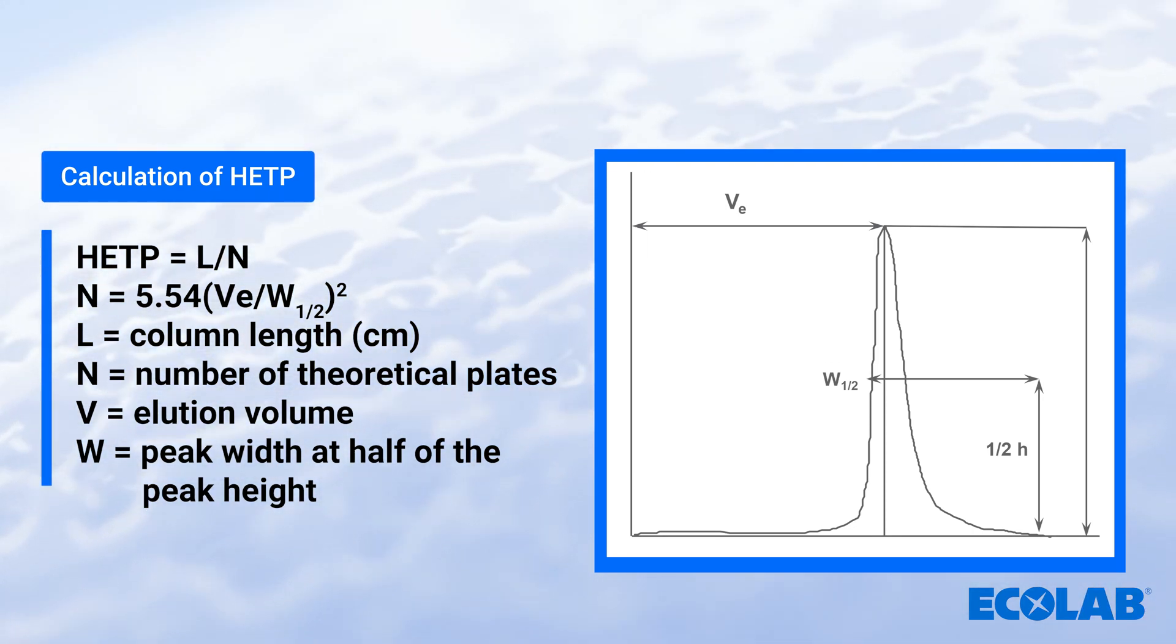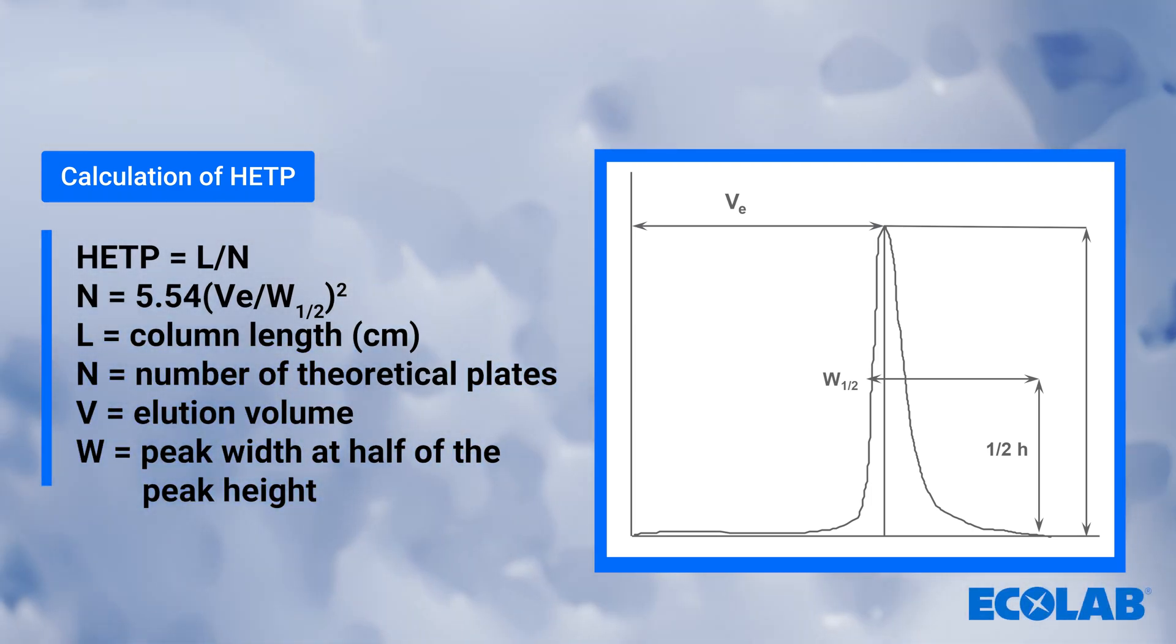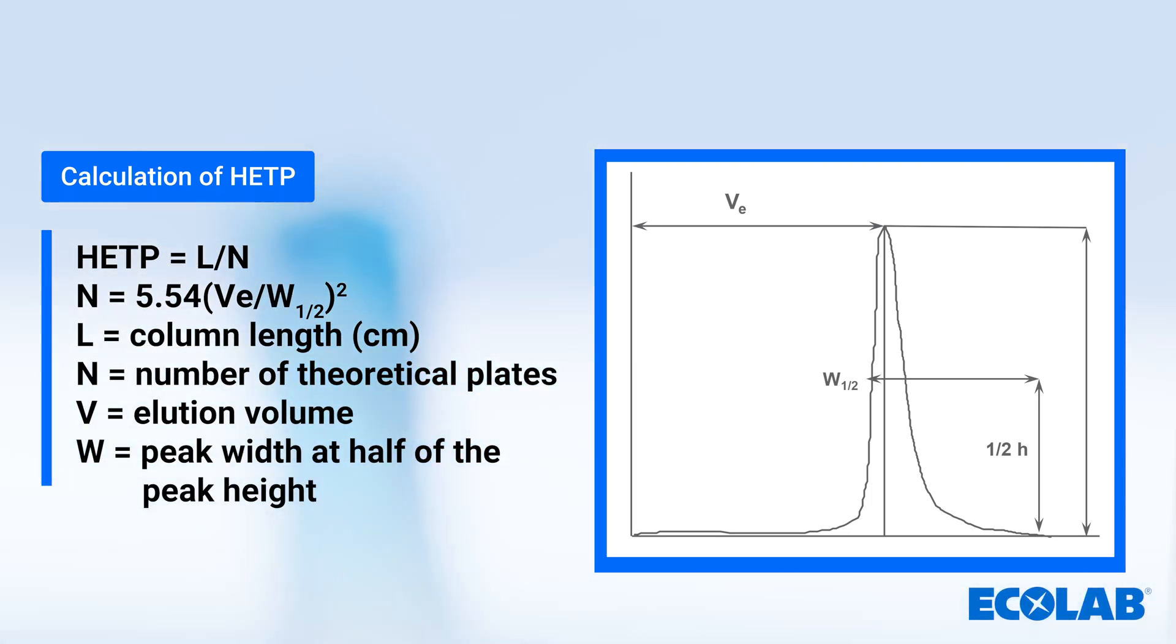The lower the HETP, the better the resolution and the more efficient the separation. Efficiency is optimized when N is maximized and the HETP is minimized. HETP will vary with the flow rate, so it is important to have an SOP with set values for testing the column.